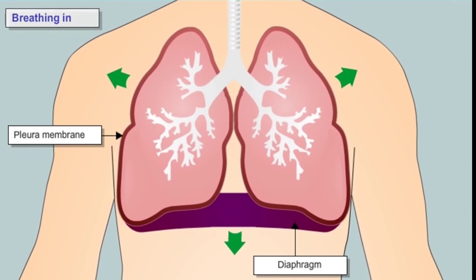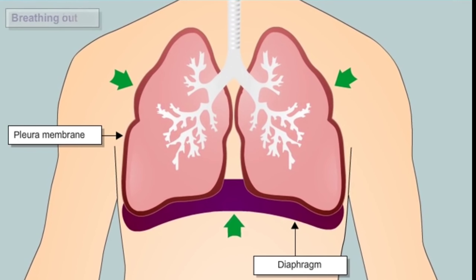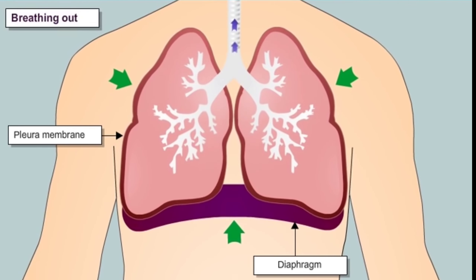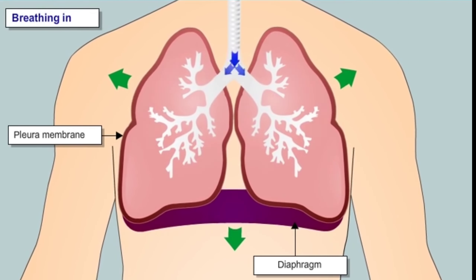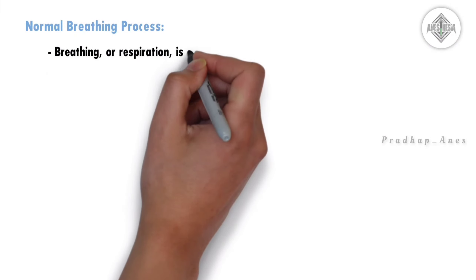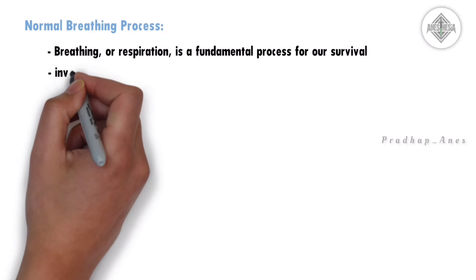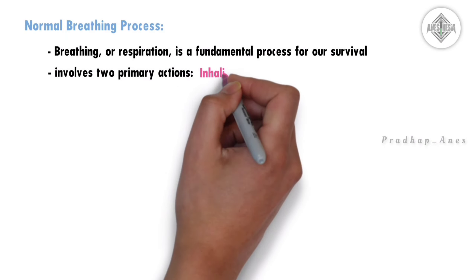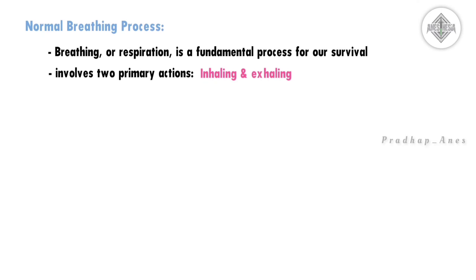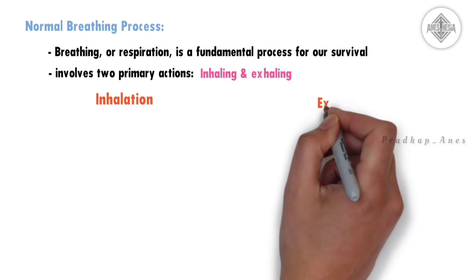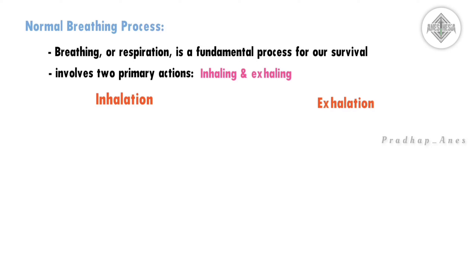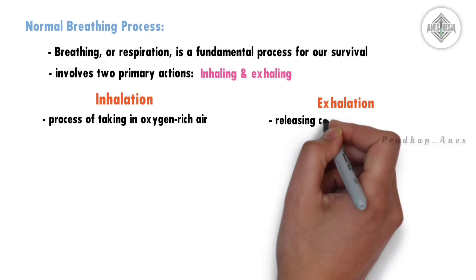Before getting further into our topic, we see how we are breathing, because understanding how our bodies obtain oxygen and remove carbon dioxide is important before you learn about ventilation. Breathing or respiration is a fundamental process for our survival. It involves two primary actions: inhaling and exhaling. Inhaling is the process of taking in oxygen-rich air, while exhaling involves releasing carbon dioxide.